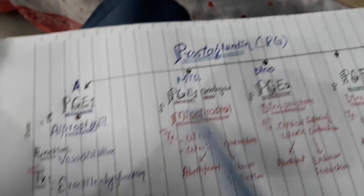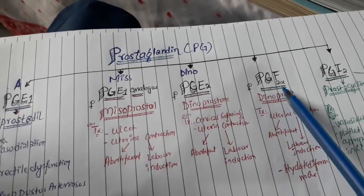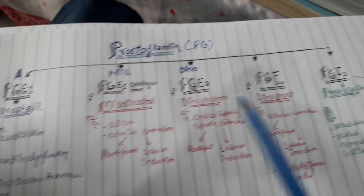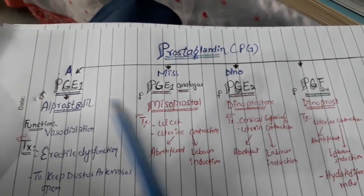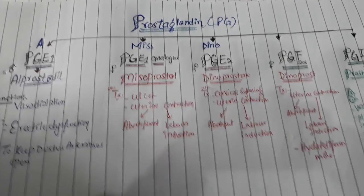So this is how you will remember - Prostaglandin E1, E1 analog, E2, F2 alpha, PGI2, PGI2 analog. For these two you will remember 'miss diano' and for PGE1 you have to remember A1. So hope it makes sense.